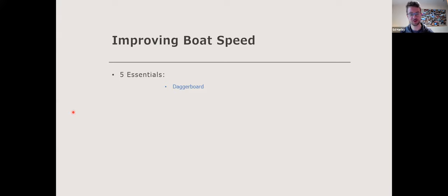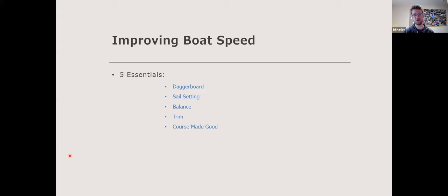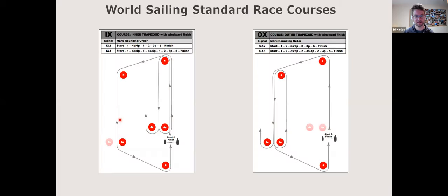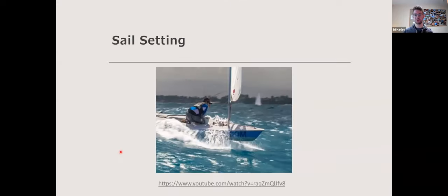In terms of improving boat speed, Ed breaks it down using the five essentials — the most essential parts of sailing to make you go fast: centreboard, sail setting, balance, trim, and course made good. These can all be adjusted independently when going downwind to optimise sailing. When going downwind, the wind is directly behind you, so the sail needs to be all the way out — but it's really easy to misjudge this, especially on boats without shrouds like Lasers and Toppers.